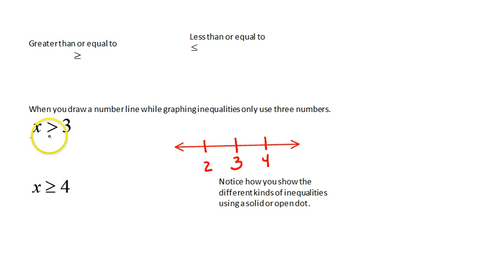Now I need to graph this. 3 is not a solution, so I'm going to use an open dot. Notice I put it above the number line, not on the number line. And then I need to show that x is greater than 3. So I'm going to draw my arrow to the right to show that any number greater than 3, but not including 3, is a solution to this inequality.